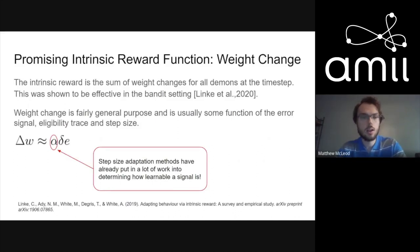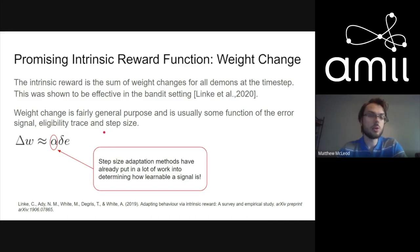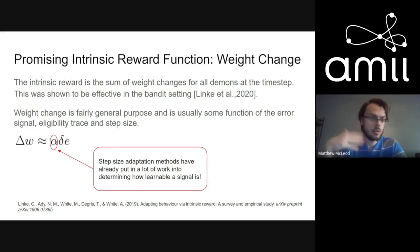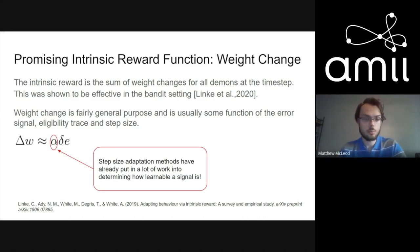From a study analyzing the bandit setting, weight change was found to be a fairly effective intrinsic reward. We've been trying it in the MDP setting. Weight change in RL is some function of the step size, the error, and the eligibility trace. What's nice about using weight change is that we offload a lot of work to the step size adaptation method — which already captures whether a signal is learnable or just noise — so we can harness that existing work.